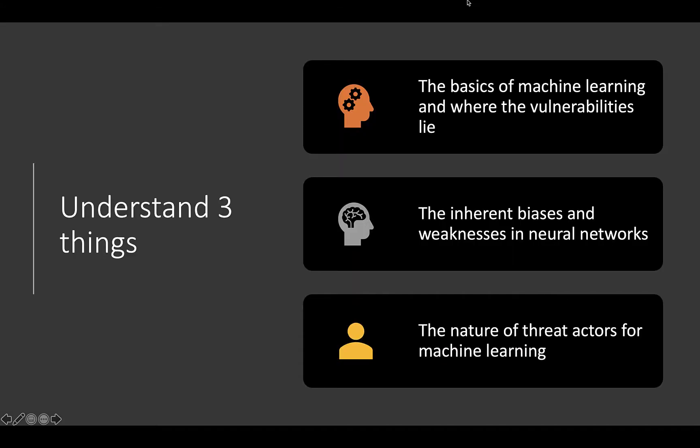By the end of this we hope to have covered three things: the basics of machine learning and where the vulnerabilities lie, the inherent biases and weaknesses in neural networks, and the nature of threat actors for machine learning.